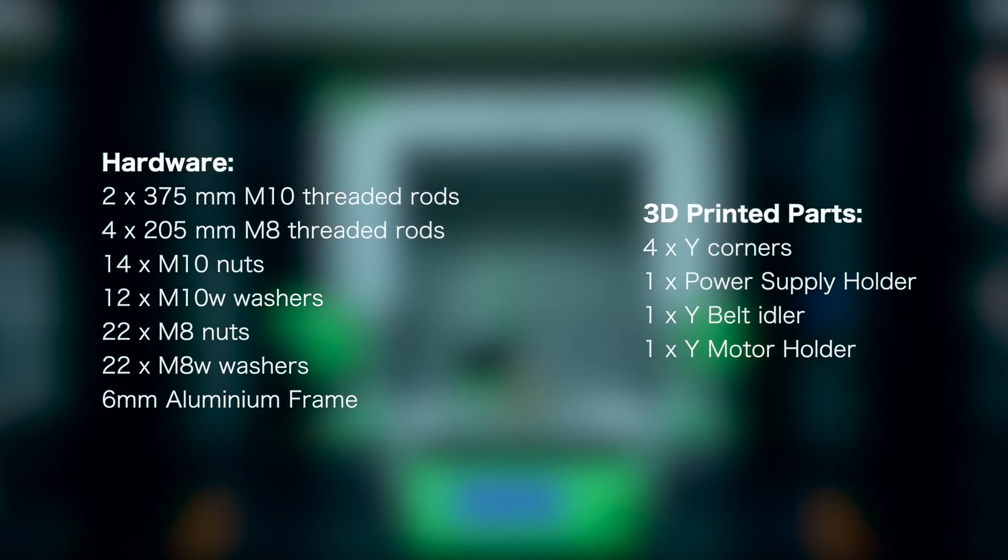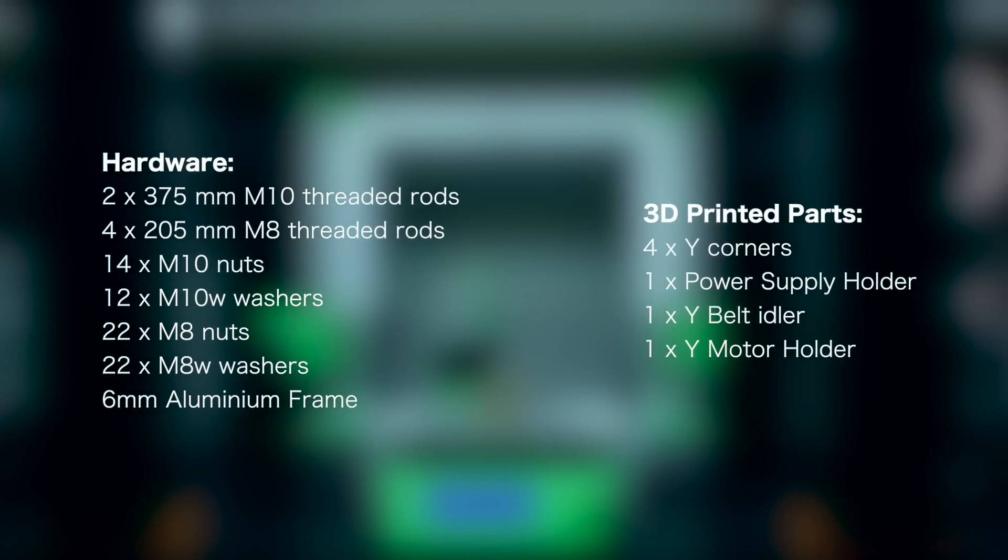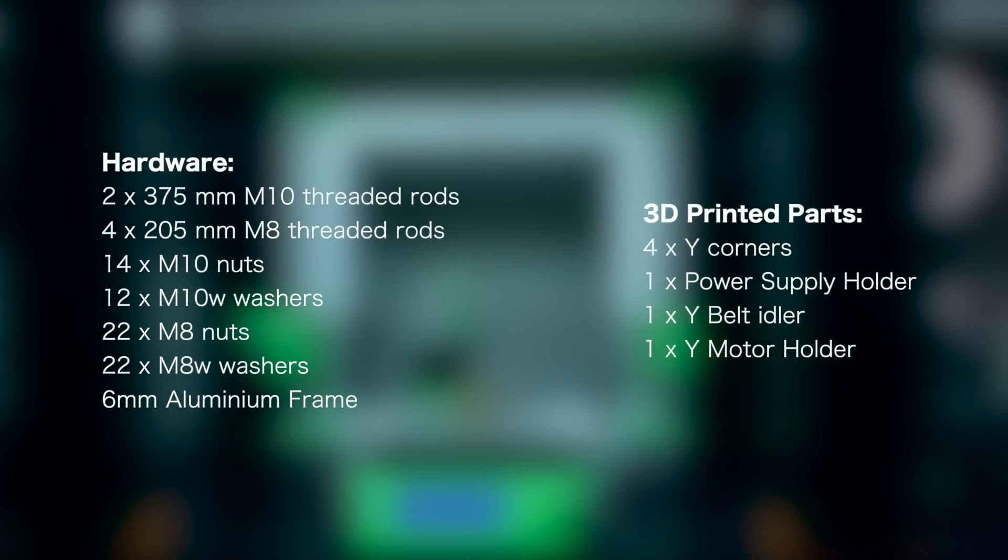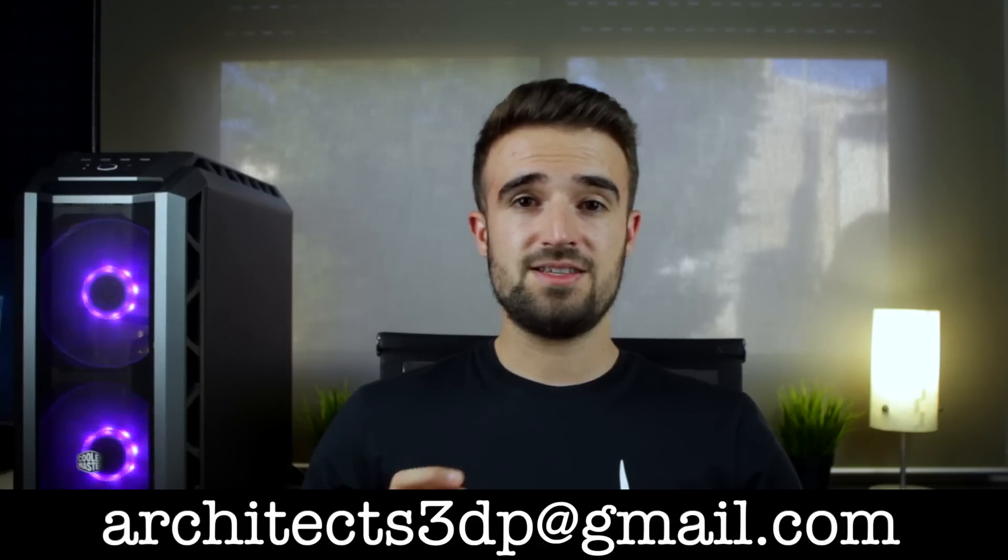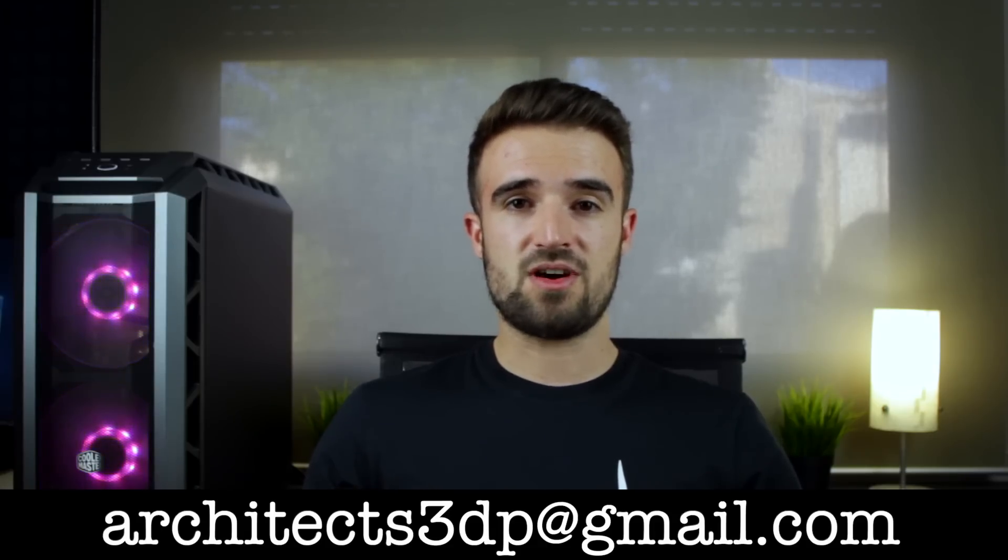For printed parts, we used the four Y corners, the power supply holder, the Y belt idler, and the Y motor holder. Remember that you will have the links in the description to download all the modified STL files and the DWG files with the plans of the aluminum frame, as well as the links to buy all the hardware through our affiliate links on Amazon. If you still don't have a 3D printer to print all the 3D printed parts yourself, you can contact me by email through my address architects3dp at gmail.com.